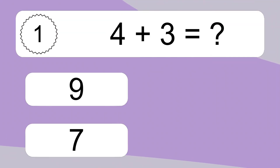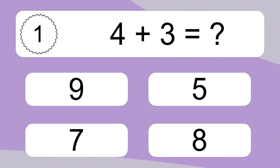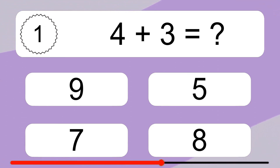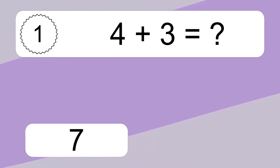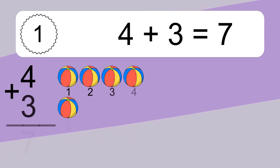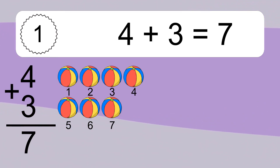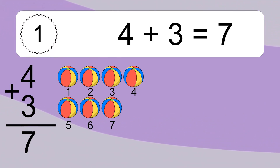4 plus 3 equals what? 4 plus 3 equals 7. Let's count it: 1, 2, 3, 4, 5, 6, 7.